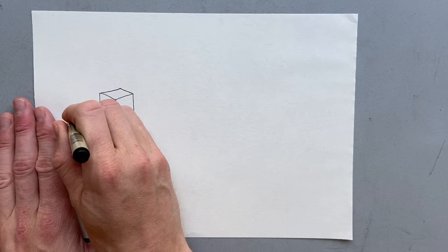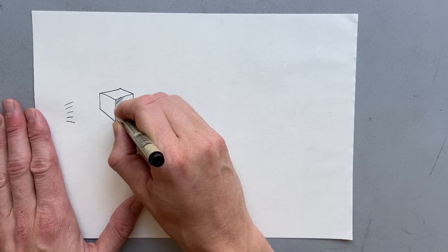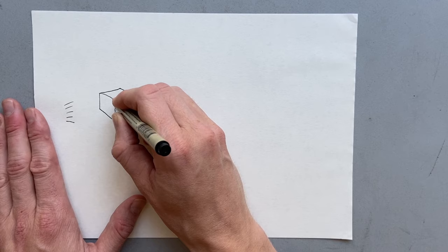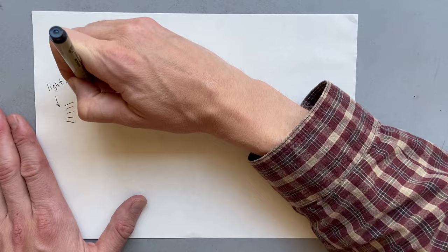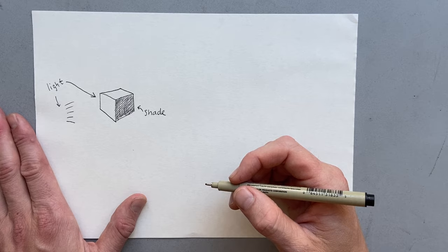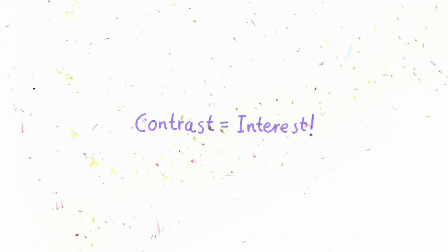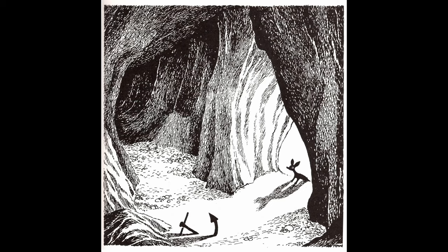Say we have a box where the light comes from the left. This means shade on the right side of the box. All of a sudden we have a sense of where light comes from and therefore a much more convincing feeling that this is an actual box. The plane of white against the plane of black creates contrast which in turn means interest because our eyes prefer contrast over blandness.